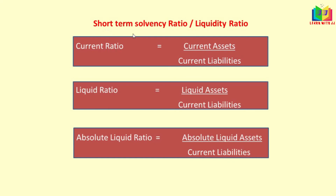Now we will see the formulas to calculate liquidity ratios. First is current ratio: current assets divided by current liabilities. Next is liquid ratio: liquid assets divided by current liabilities. And third is absolute liquid ratio: absolute liquid assets divided by current liabilities.